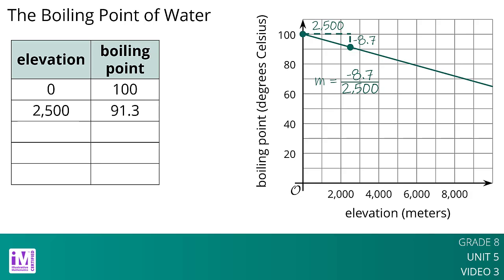Next, we already know the y-intercept is 100 degrees Celsius from the first point, so a linear equation representing the data is y equals negative 8.7 over 2,500 times x plus 100.